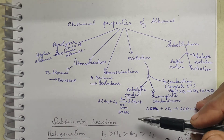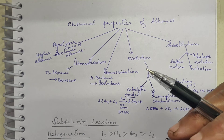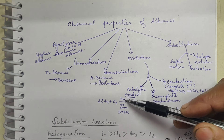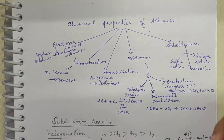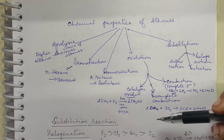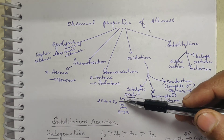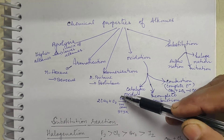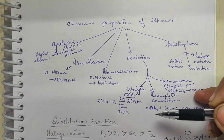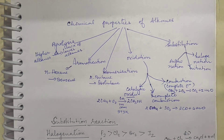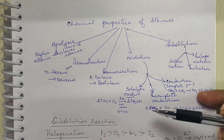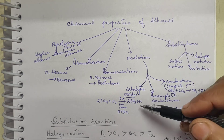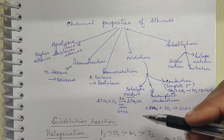Catalysts have two properties: activity and selectivity. Activity means a catalyst initiates a particular reaction. Selectivity means it directs the reaction towards the formation of a particular product. In the presence of copper you get methanol; if you use molybdenum oxide, you may get formaldehyde.